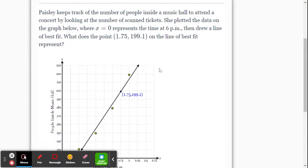So here we have Paisley keeping track of the number of people inside a music hall to attend a concert by looking at the number of scanned tickets. She plotted the data on the graph below where x equals zero represents the time at 6 p.m., then drew a line of best fit. What does the point (1.75, 199.1) on the line of best fit represent?